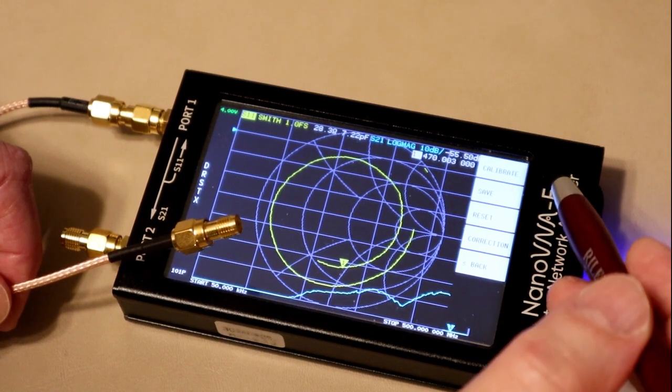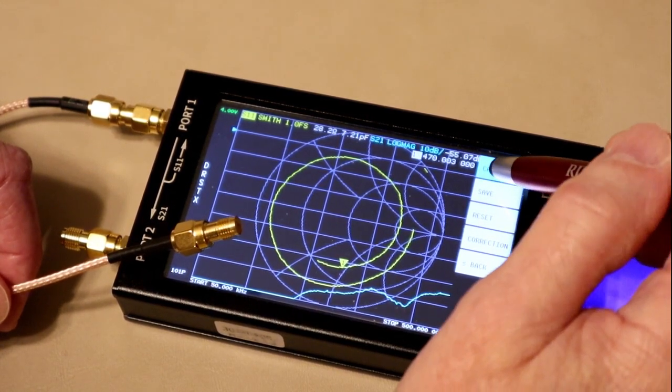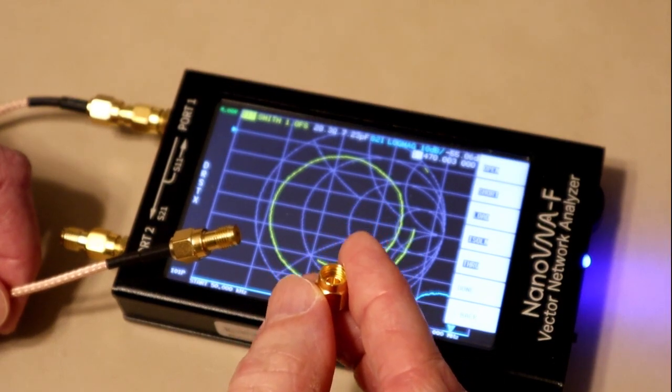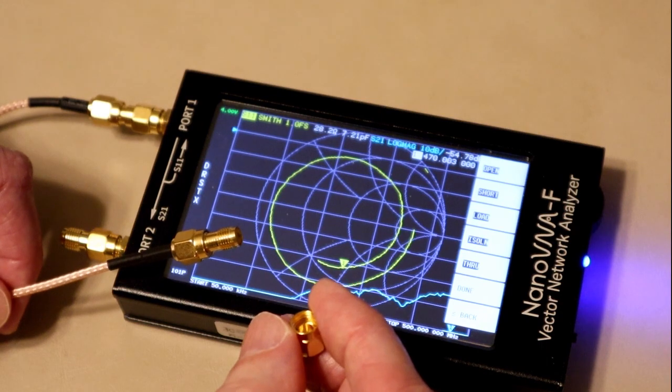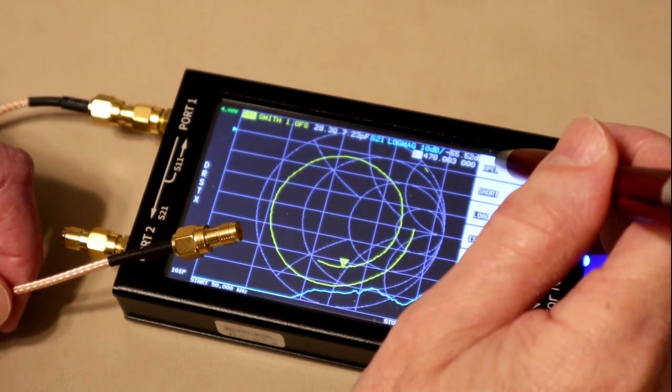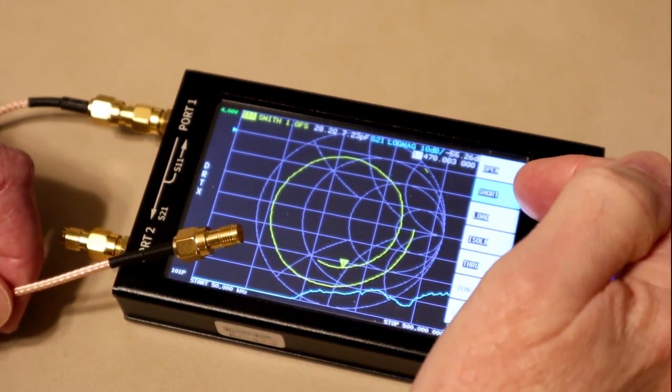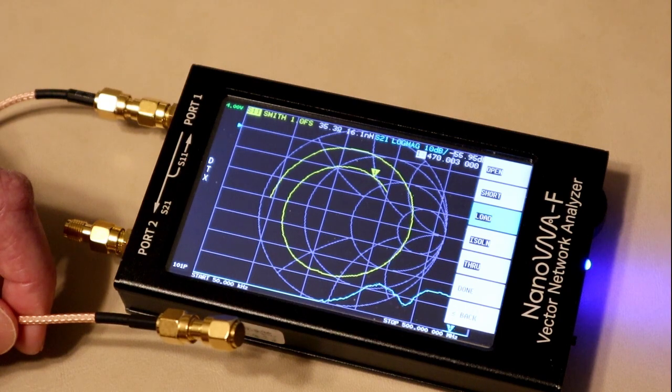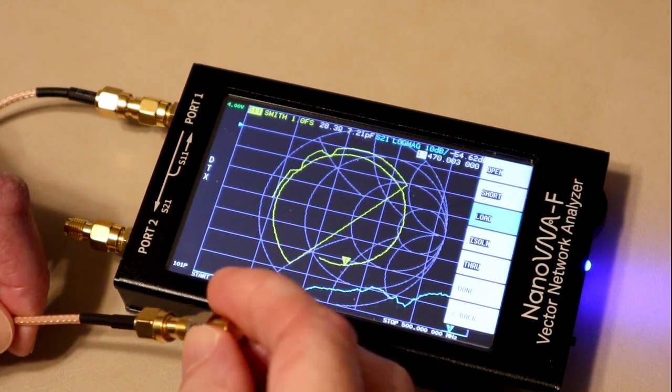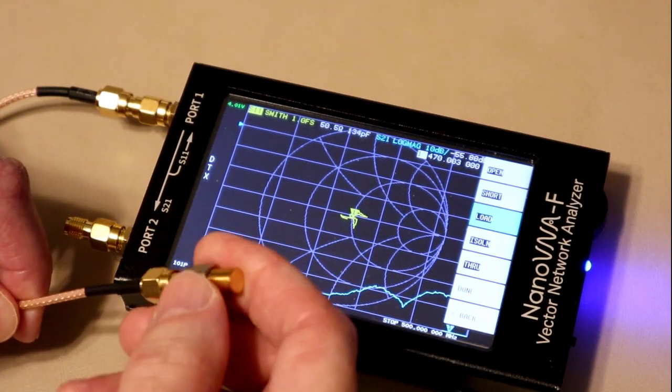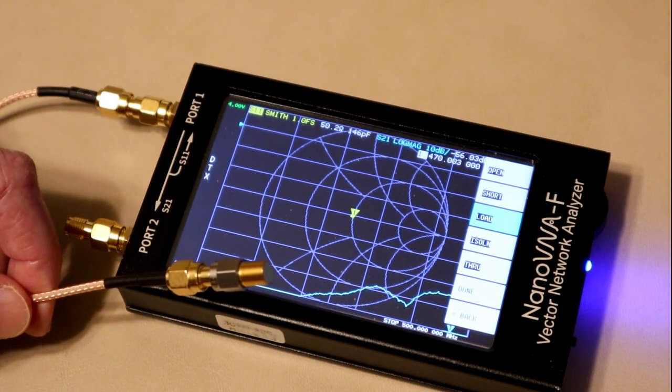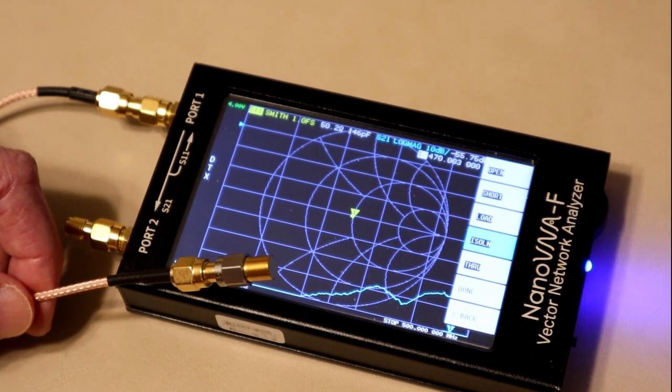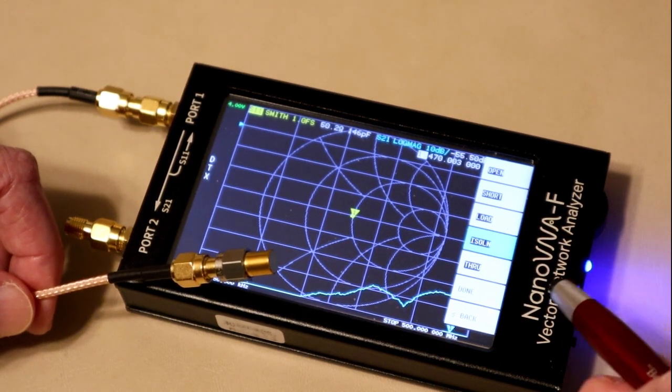Step 6 is to start the calibration and present the short open and load references. So I go to Cal, Correction is off, I'm going to hit Calibrate, and this is an open, or I could put this little open cap on the end of it. At these frequencies, it doesn't matter. At higher frequencies, it does. I'm just going to leave it off. I'm going to hit Open. All right, the next thing is it's telling me it wants me to present a short, so I will put that on. Now, once it's all settled down, I hit Short. Now it says put the load on. So this is my 50 ohm termination load that I put on. It should go somewhere toward the center, and it does. And I hit Load. And at this point, since I'm only doing an S11 Cal, I'm basically done. We'll cover isolation and through later. So I'm going to hit Done.